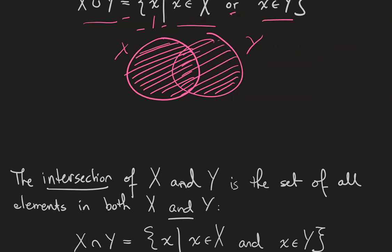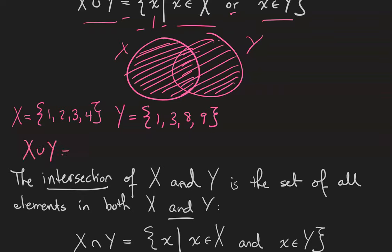For an example, let x equal the set {1, 2, 3, 4} and y be the set {1, 3, 8, 9}. Then the union x union y equals {1, 2, 3, 4, 8, 9}. Notice that I don't count 1 and 3 twice because they've already been listed once.